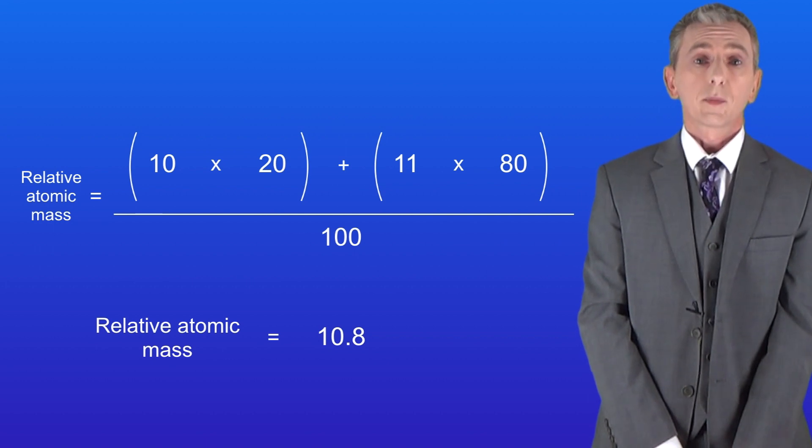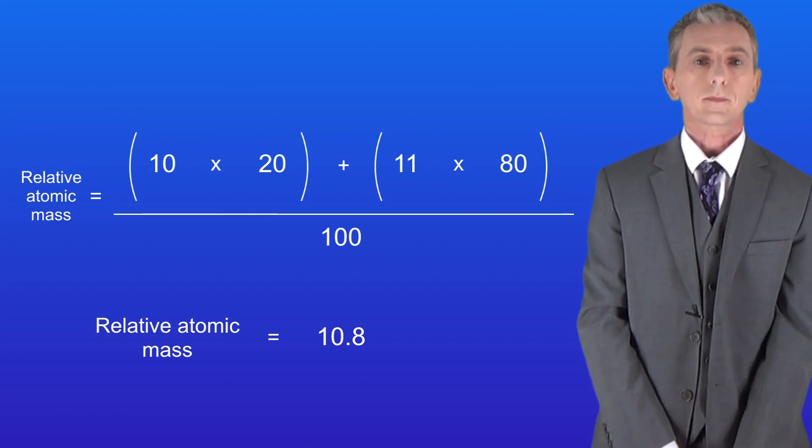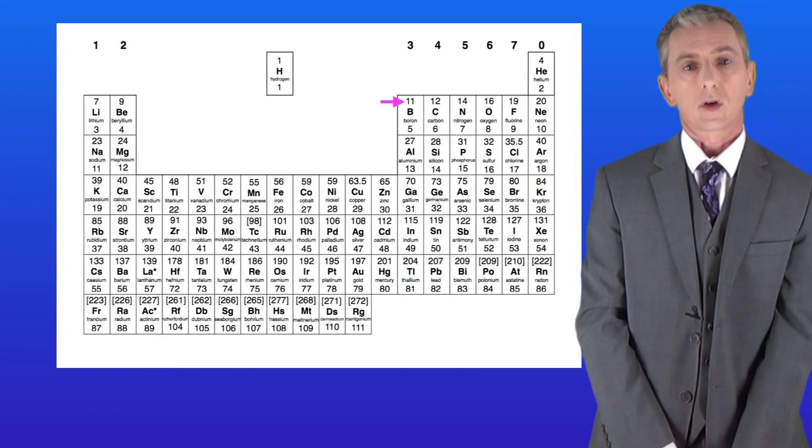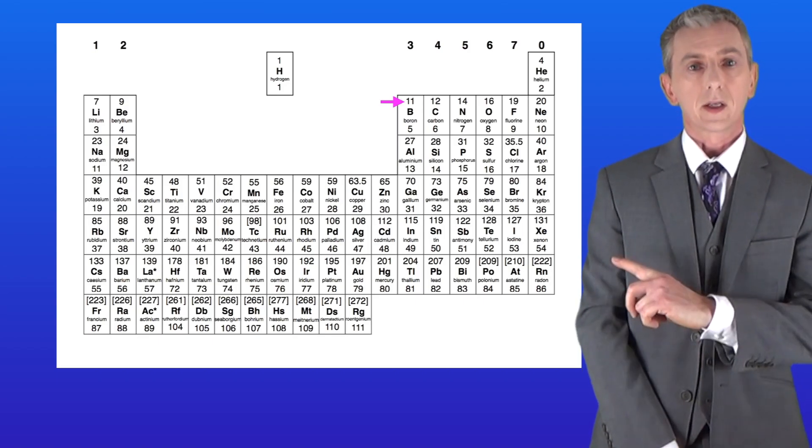Okay, putting these numbers into the equation gives us a relative atomic mass for boron of 10.8. Now in the GCSE periodic table the relative atomic mass for boron has been rounded up to 11 and here it is.